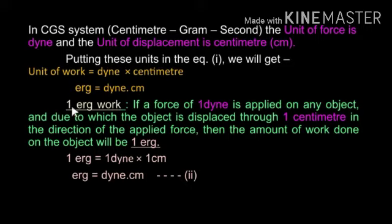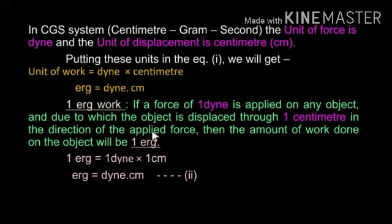How much is 1 erg of work? If a force of 1 dyne is applied on any object and due to that applied force the object is displaced through 1 centimeter in the direction of the applied force, then the amount of work done on that object will be 1 erg. Therefore, 1 erg is equal to 1 dyne into 1 centimeter — that means erg equals dyne centimeter. This is equation number 2.